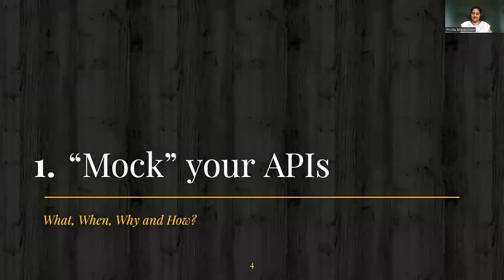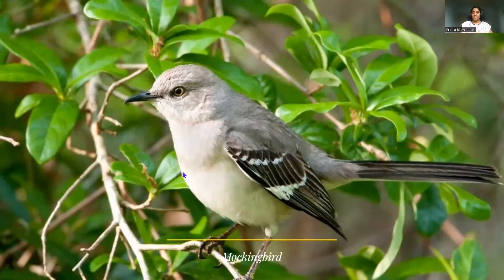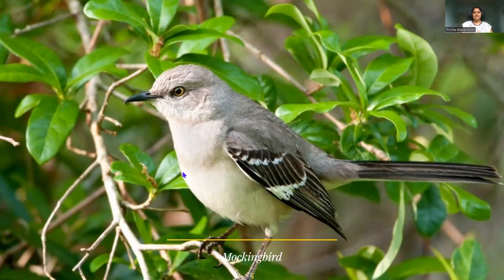Let's start with our first interesting topic — mock your APIs. Why do we have to do that? Before starting the mocking process, you should first know why we are mocking. This image is nothing but a mockingbird. A mockingbird is something which is capable of mimicking the sounds it receives — human sounds, traffic noise — it's able to mimic all the noises. You will literally relate why I am putting out a mockingbird right now with mock servers — there is a relationship.